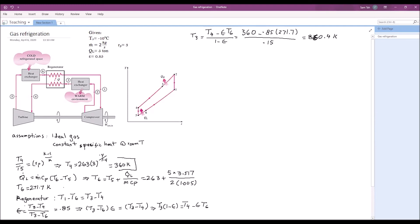Now we can go back to the equation for the regenerator and calculate T1. So I write that equation again: T1 minus T6 equals T3 minus T4. Now we have T6, T4, T3. We can calculate T1, and T1 is equal to 772.1 Kelvin.